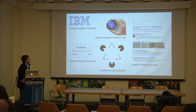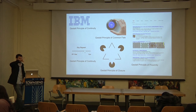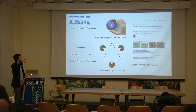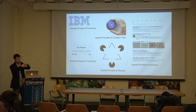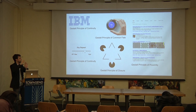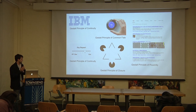The Gestalt Principle of Common Fate — going back to the Nest example: you twist the Nest to adjust the temperature, and when you twist it, the little bar on it twists with you. Because it moves with your twisting, you understand that they're correlated. That understanding of correlation is called the Gestalt Principle of Common Fate. When things move together in a similar pattern, you understand they're the same thing.